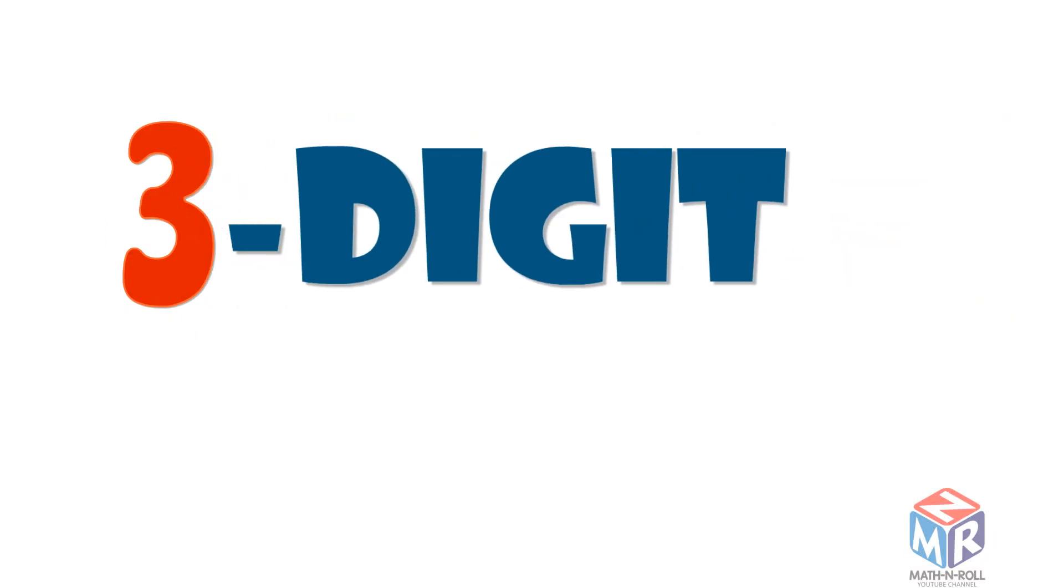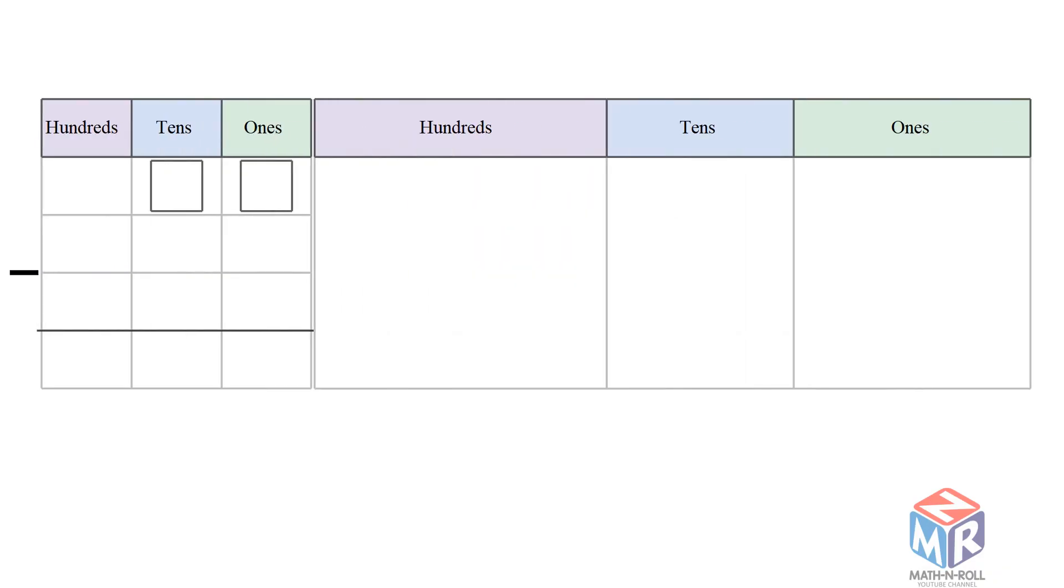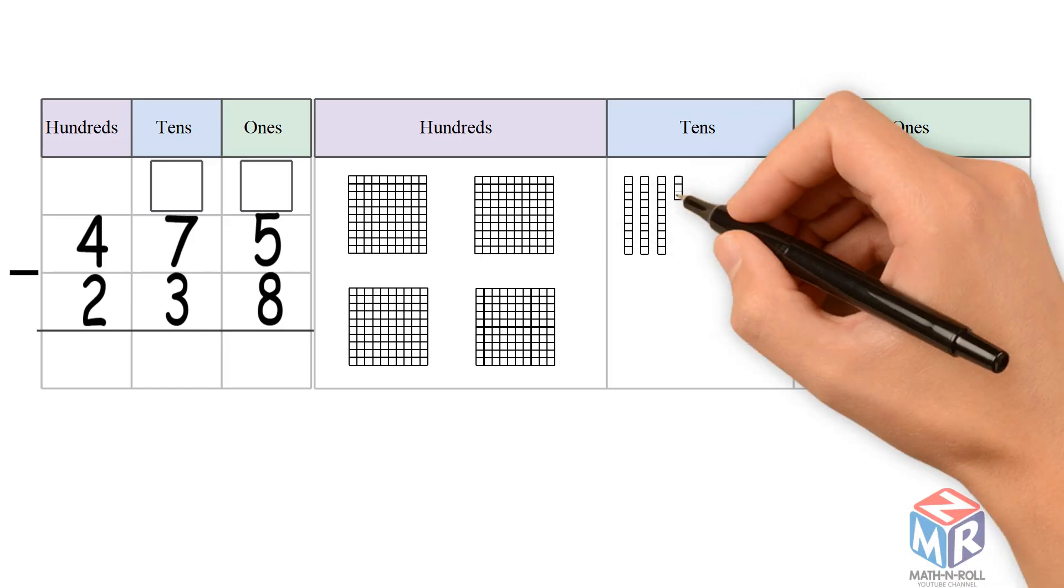3-digit subtraction, regrouping tens. Let's try an example: 475 minus 238. Let's draw 475. We have 4 hundreds, 7 tens, and 5 ones.